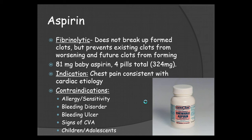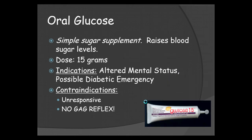Aspirin is indicated for chest pain consistent with cardiac etiology — if you feel like their heart's involved, give aspirin. Contraindications for aspirin are an allergy or sensitivity to aspirin or other non-steroidal anti-inflammatories, any type of bleeding disorder, a bleeding ulcer, signs of a CVA, and children and adolescents. Also keep in mind whether they are taking blood thinners like warfarin or coumadin. Check your protocols for more detailed contraindications, indications, and dosing.